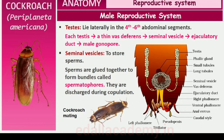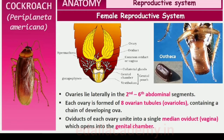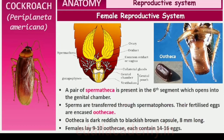The female reproductive system consists of two large ovaries lying laterally in the 2nd–6th abdominal segments. Each ovary is formed of a group of 8 ovarian tubules or ovarioles containing a chain of developing ova. Oviducts of each ovary unite into a single median oviduct, also called vagina, which opens into the genital chamber. A pair of spermathecae is present in the 6th segment which opens into the genital chamber. Sperms are transferred through spermatophores. The fertilized eggs are encased in capsules called oothecae — a dark reddish to blackish brown capsule, about 8 mm long. They are dropped or glued to a suitable surface, usually in a crack or crevice of high relative humidity near a food source. On average, females produce 9–10 oothecae, each containing 14–16 eggs.